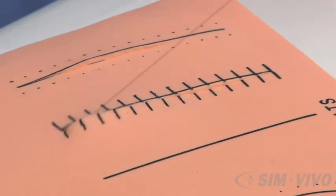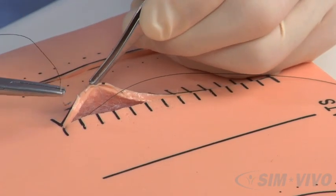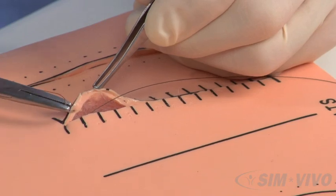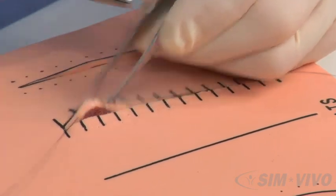Once you have retrieved the needle, move your Adsons to the skin edge closest to you at a point one marker over to the left of the marker that you have just used to guide your exit. Pull it up and towards you.